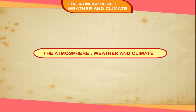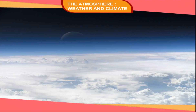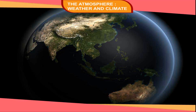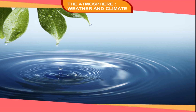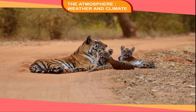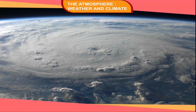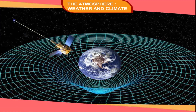The Atmosphere, Weather and Climate. The blanket of air surrounding the Earth is known as the atmosphere. Without air, Earth would have been a lifeless planet. It not only supplies air and water to the plants and animals, but also protects them from the harmful rays of the sun. The atmosphere stretches above the Earth to a height of more than a thousand kilometers, and is held in place by the Earth's force of gravity.